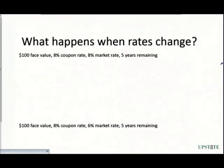Now, there's a difference that happens when the rates change. On this first one, we don't even need to put this into our calculator because we know that the actual value of this bond is going to be $100. 8% coupon rate, 8% market rate, these rates are equal. So that means the present value is going to be $100.